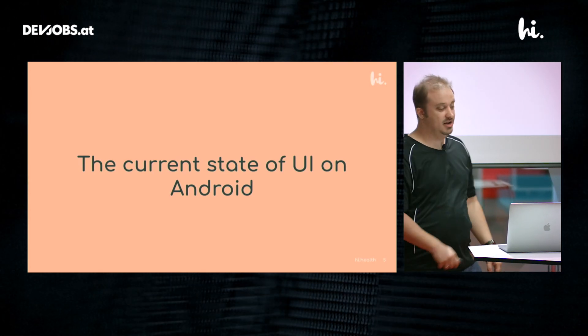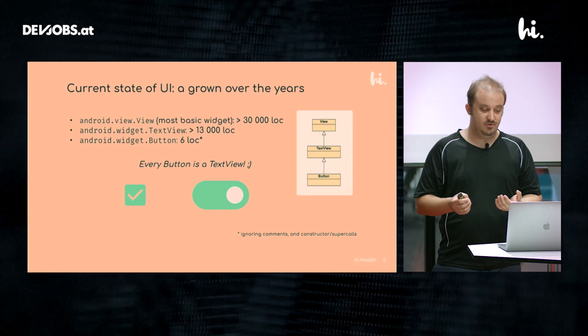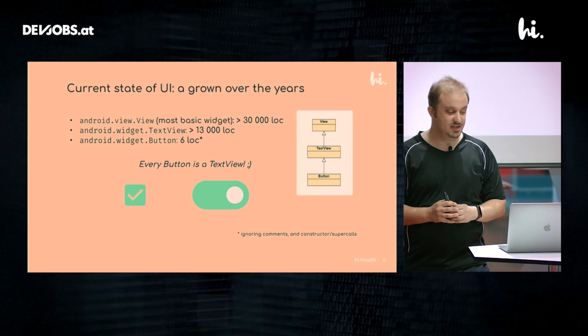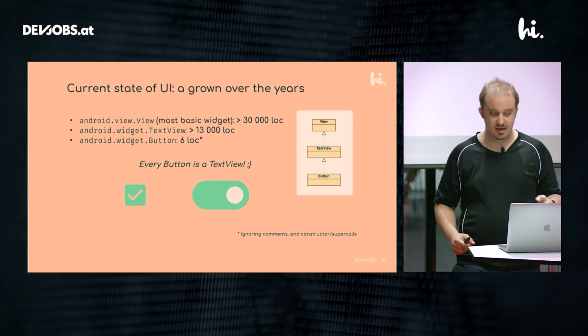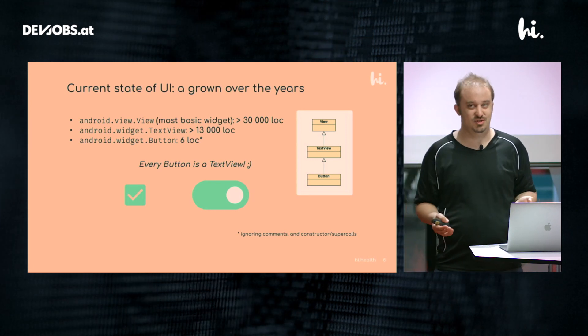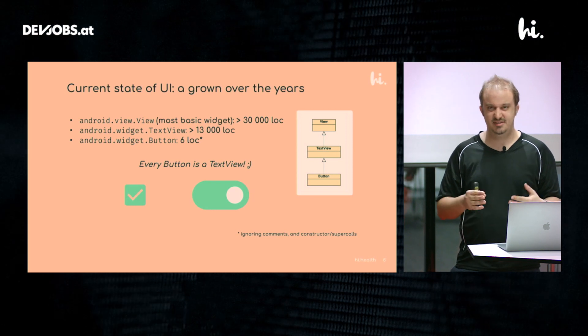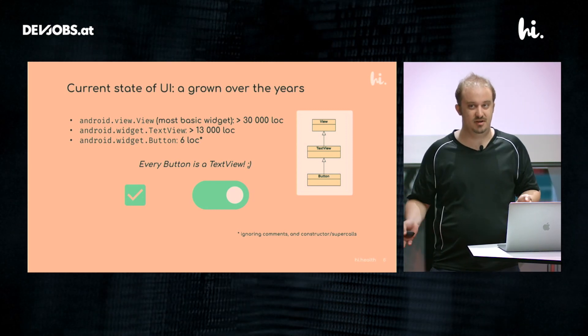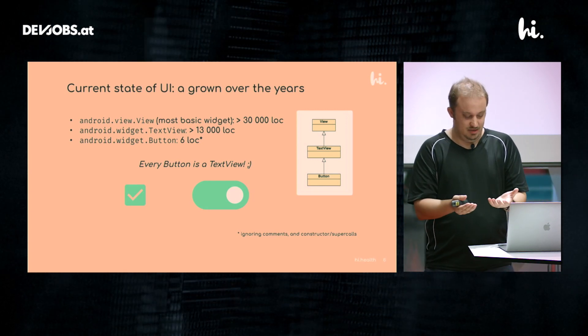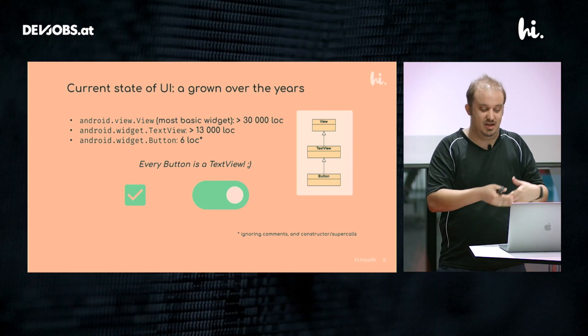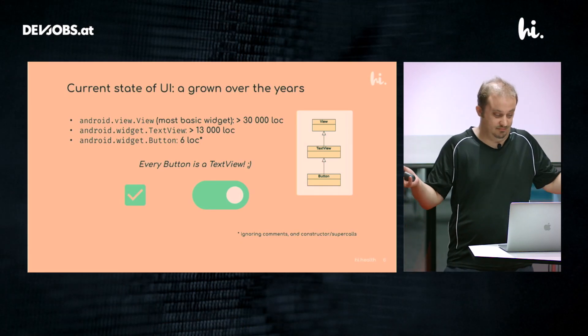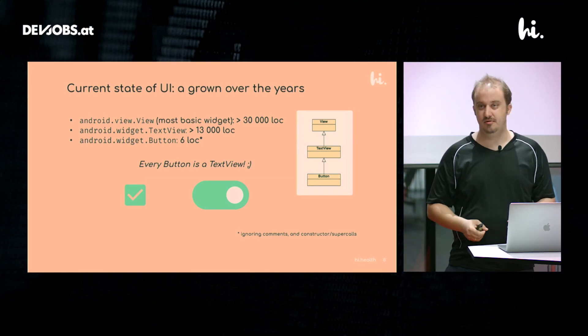What is the current state of UI on Android? Android is more than 10 years old, so it has grown over the years and has some baggage. The View, the most basic widget, has more than 30,000 lines of code, and the second most basic widget, TextView, has 13,000 lines of code. When something goes wrong you usually look up what's happening in the code, and you cannot do that with that many lines. And when you think things get interesting, look at Button — it has effectively six lines of code and derives from TextView. This somehow works and we've learned to use it, but it's time for something new.